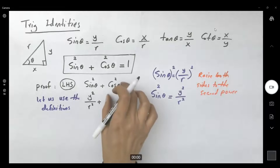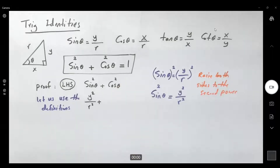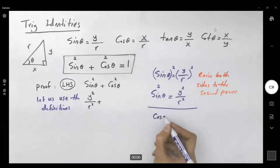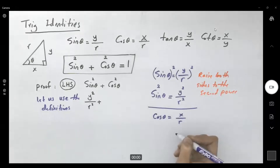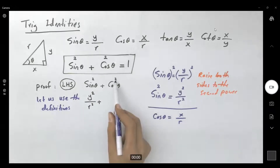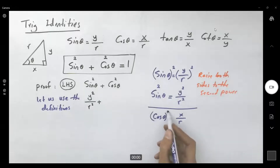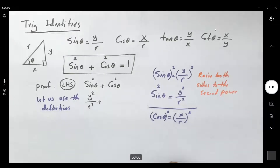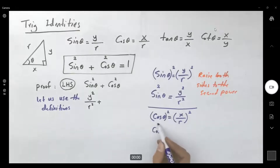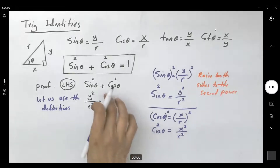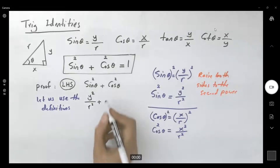Now I need to raise cosine to the second power. The definition of cosine is x over r, so cosine squared of theta becomes x squared over r squared. I'm going to copy this down here — this is x squared over r squared.